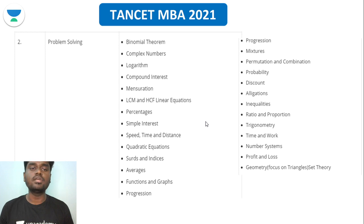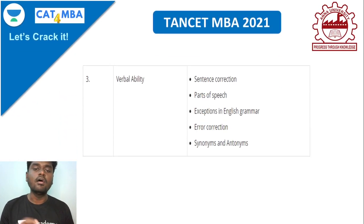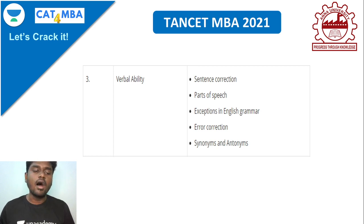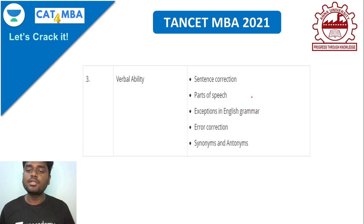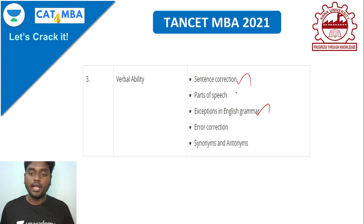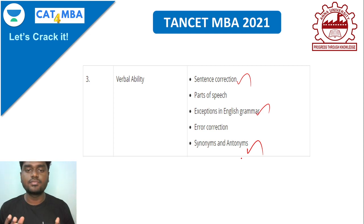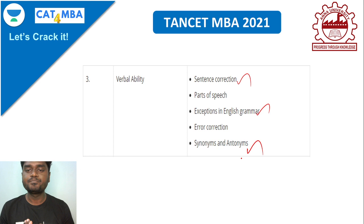The third section is Verbal Ability, where you are tested on how good you are in verbal skills. You need to have proper knowledge of English grammar, sentence corrections, and error spotting. You also need a sound knowledge of various synonyms and antonyms — that is, the exact meaning and opposite of a given word.